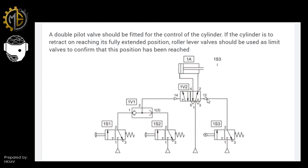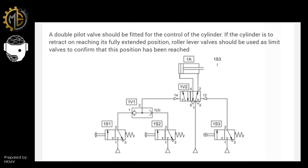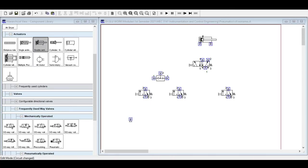When the roller lever is actuated, it sends a signal to return the final control element to its initial position, which then retracts the double-acting cylinder. Let's see this in the simulator by bringing out the needed components.